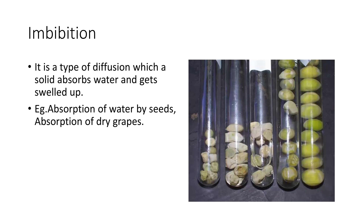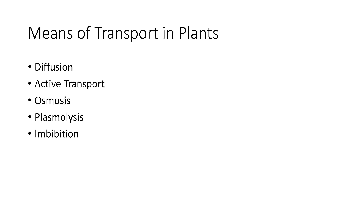Imbibition. Imbibition is a type of diffusion in which a solid absorbs water and gets swelled up. Example: absorption of water by seeds. Here you can see the imbibed seeds in the test tube. Now we have learnt the different means of transport in plants: diffusion, active transport, osmosis, plasmolysis, and imbibition.